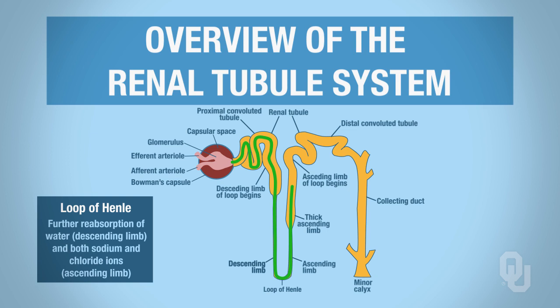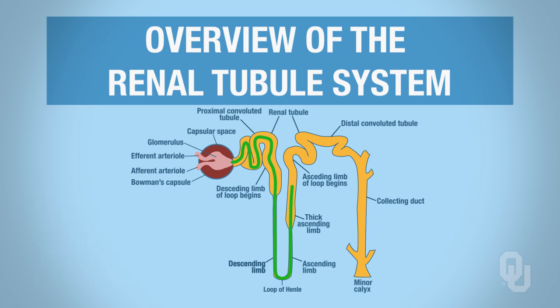As it goes through the descending limb, we're going to be doing some reabsorption of water. And then as it passes through the ascending limb, we're doing a lot of reabsorption of our ions.